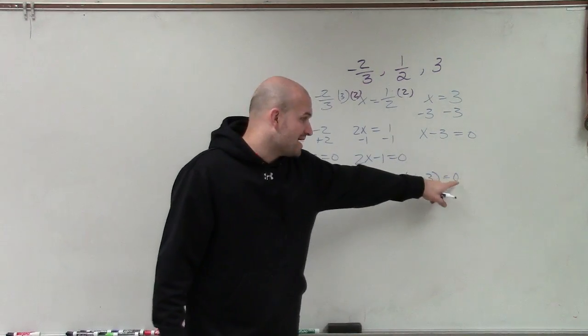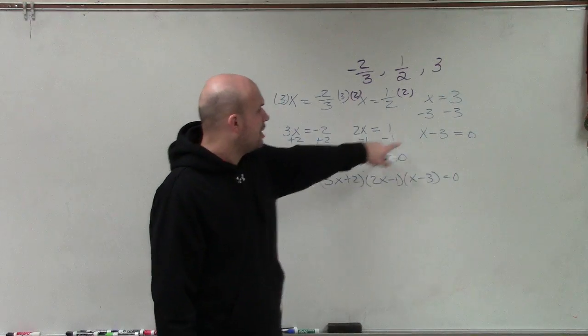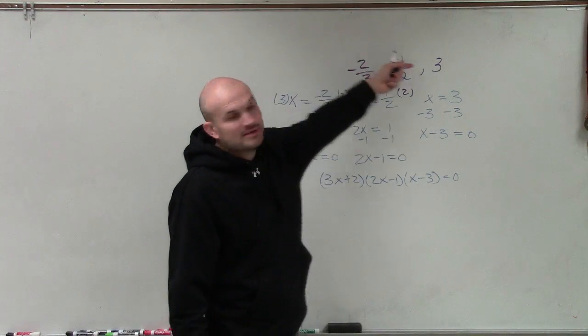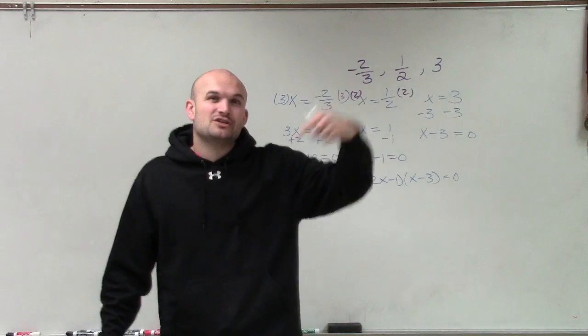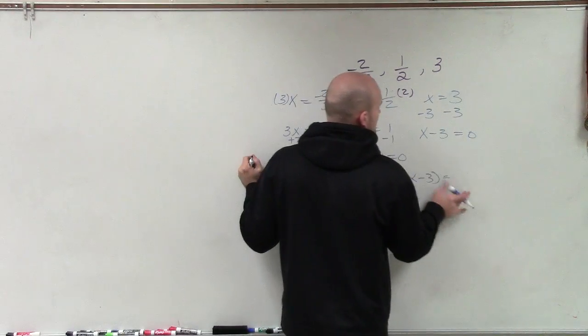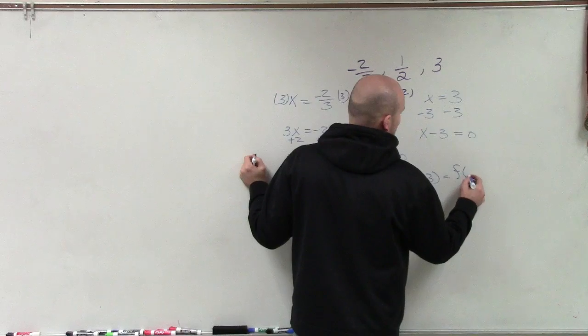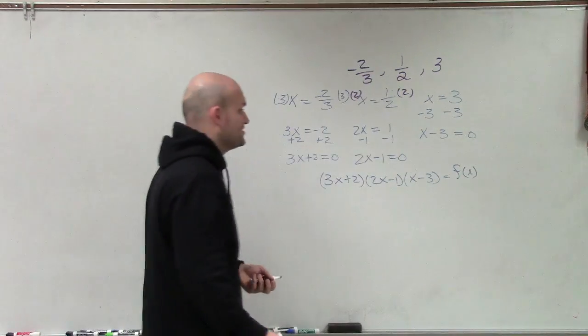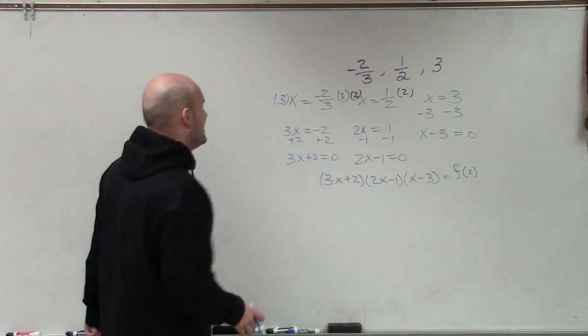since the product is equal to 0, you would set them all equal to 0 and then solve, and that would be your list of zeros. However, we're not trying to determine the zeros. We already know the zeros. We're trying to determine what is going to be the polynomial. So therefore, then what I need to do is multiply them.